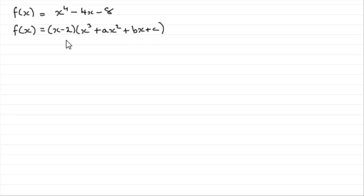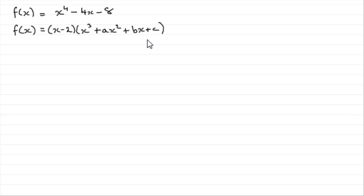There are two ways that spring to mind to be able to do this. The quickest method is by algebraic long division. The other way is to expand the bracket and compare coefficients. I'll do both ways for you — the algebraic long division method first, and you can compare the two methods.